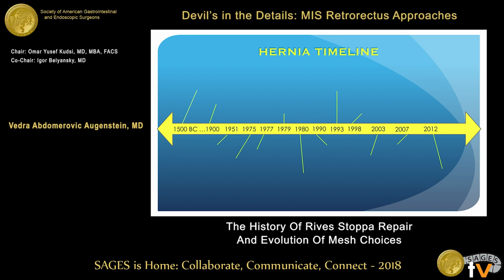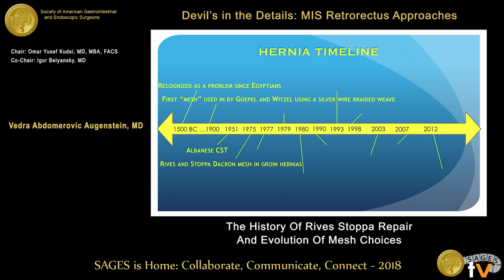I created a little timeline of hernia history. Hernias have been recognized as a problem since the Egyptians in 1500 BC. In the 1900s we first started hearing about mesh use, when mesh was essentially a silver wire braided weave. The first component separations were mentioned in 1951. The Reeves-Stopa repair was first recognized for enforcement and fixation of inguinal hernias. Then we had ventral hernia and paniculectomy combos in 1977. Chevrelle describes the onlay in 1979, and then the Reeves-Stopa retroerectus repair for abdominal wall defects.